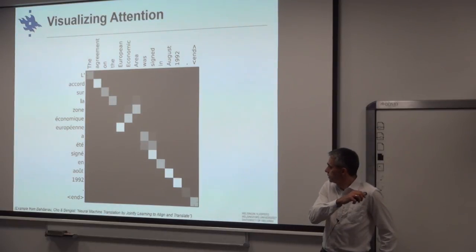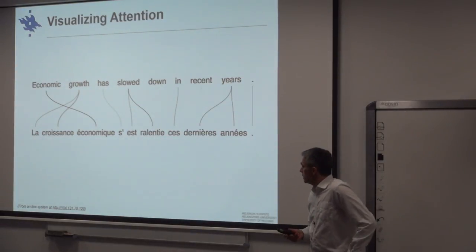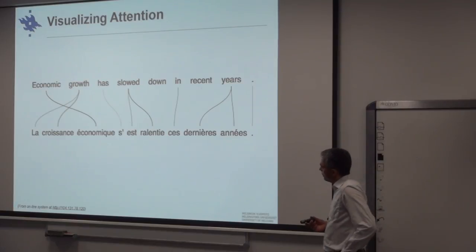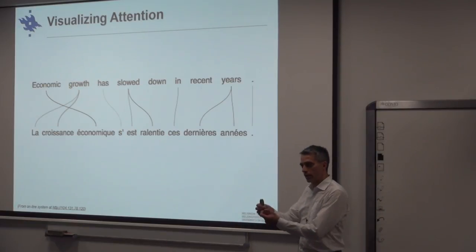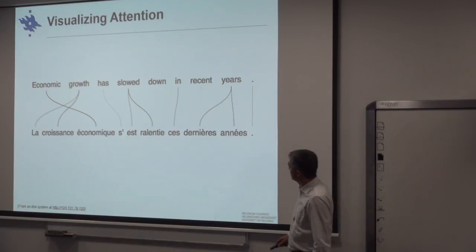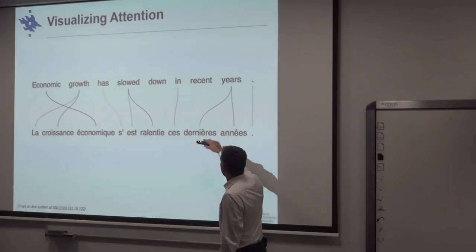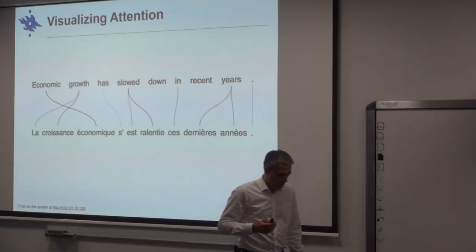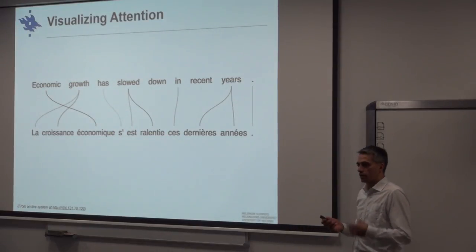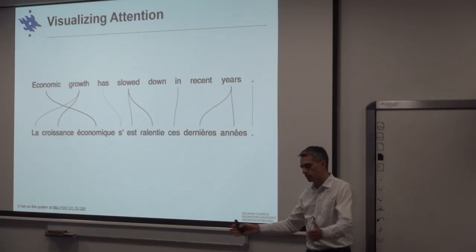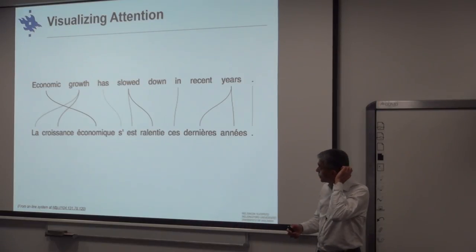Another visualization draws soft lines between source and target words — similar to word alignments in statistical MT, but here with soft connections showing where the system is looking to translate certain things. This is a purely data-driven technique that picks up these correspondences. This is the key success of NMT: using much more information from the entire sequence and combining it into the decoded elements.